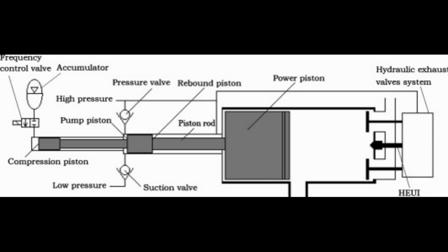Due to the development of machines like turbines, compressors, etc., it was required to find a source of energy that could run these machines. The available sources required a large setup and were also inefficient due to the lack of symmetry. This problem was solved with the invention of the free piston engine, which provides a symmetrical and efficient way of converting chemical energy into mechanical work.